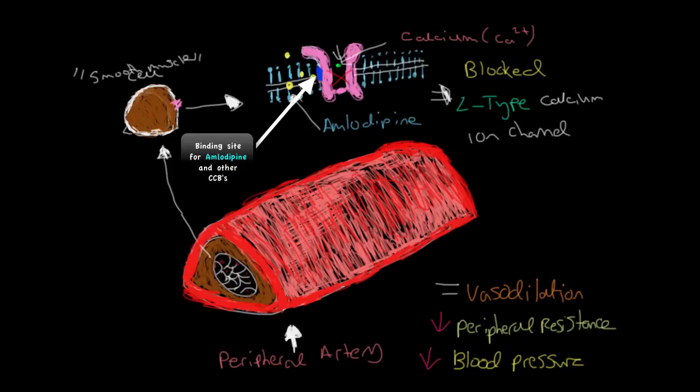This is what makes the dihydropyridine drugs like amlodipine so good as antihypertensives as they really are specific to peripheral arteries.